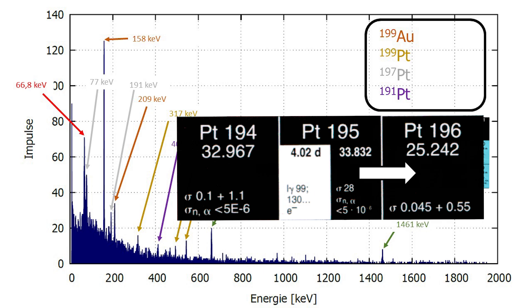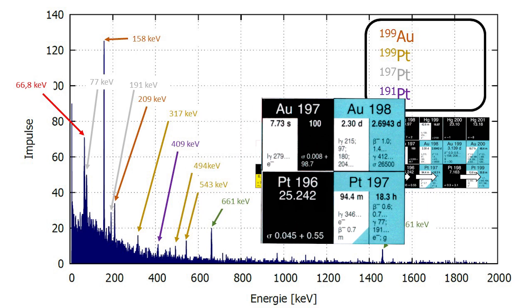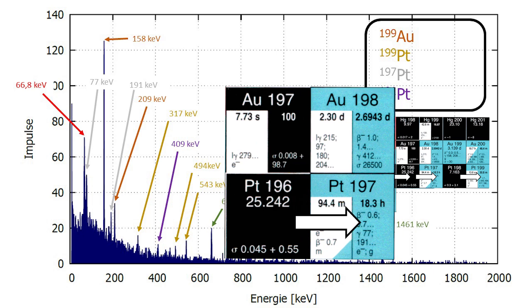Platinum 195 can capture a neutron and become the stable platinum 196. Well, you can't see that because there is no decay. Existing platinum 196 can also capture neutrons to become radioactive platinum 197. And here you can see the lines beautifully.